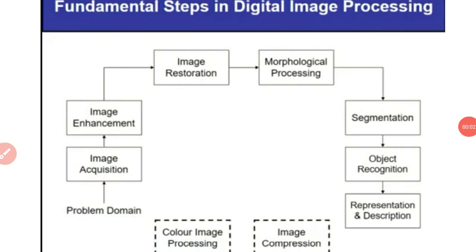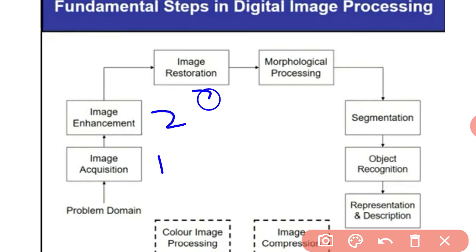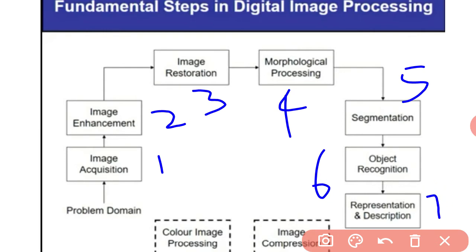The second concept of digital image processing covers the fundamental steps. These are: image acquisition, image enhancement, image restoration, morphological processing, segmentation, object recognition, representation and description, image compression, and color image processing.